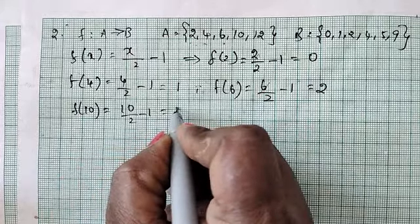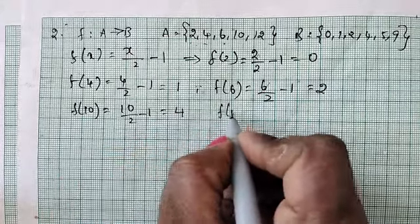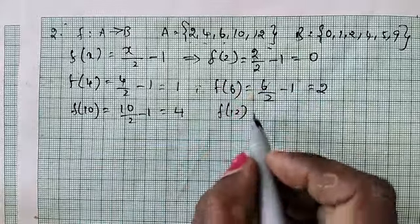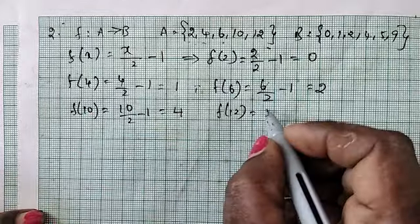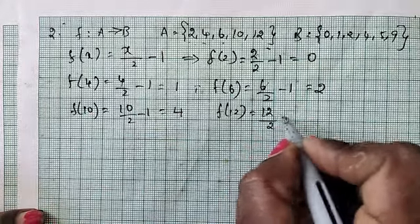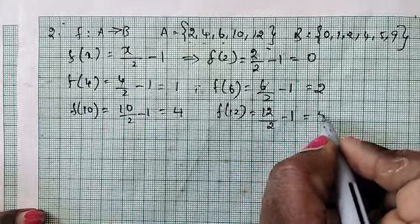Next f(12). f(x) equal to x by 2 minus 1. So 12 by 2 minus 1, so 6 minus 1 equal to 5.